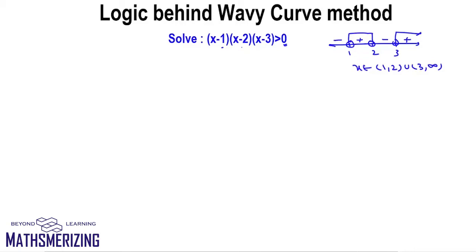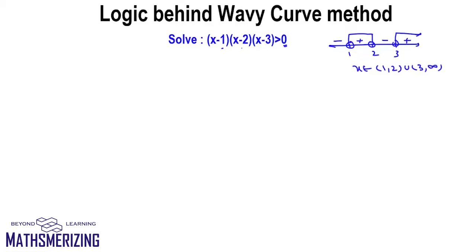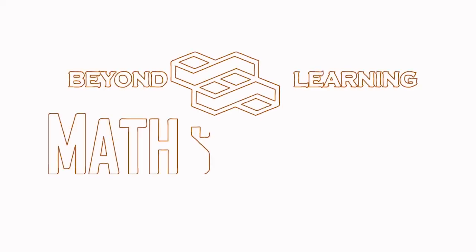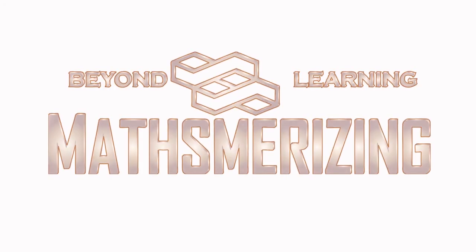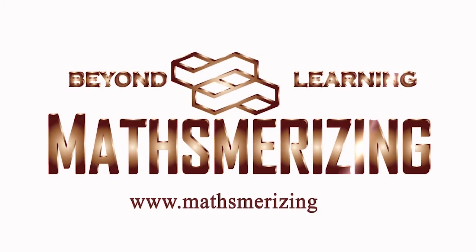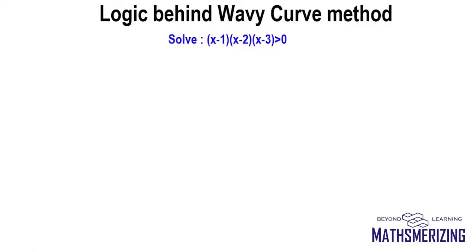We'll look into all the five steps in the wavy curve method and examine why we do what we do. Solve (x minus 1)(x minus 2)(x minus 3) greater than 0.